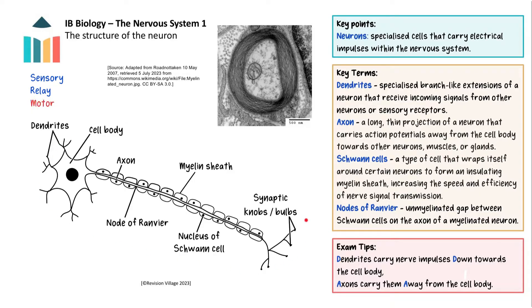This diagram here shows a motor neuron. These are the dendrites, tree-like branches extending from the neuron cell body. Their primary function is to receive neurotransmitter signals from other neurons and carry the impulse towards the cell body. The cell body, also known as the soma, is the part of a neuron that contains the nucleus and other essential cellular components. It is the main metabolic and structural region of the neuron.